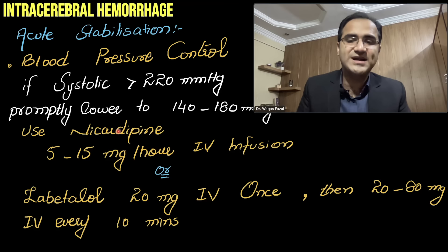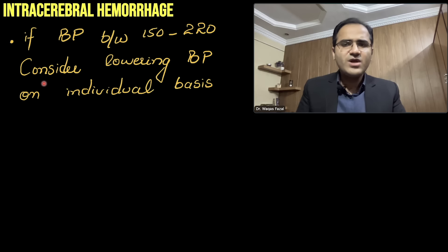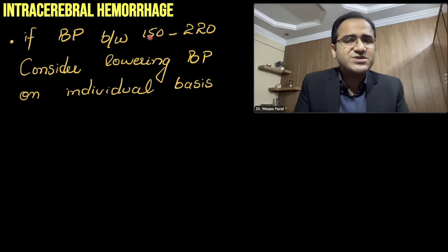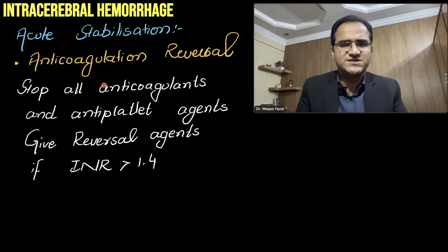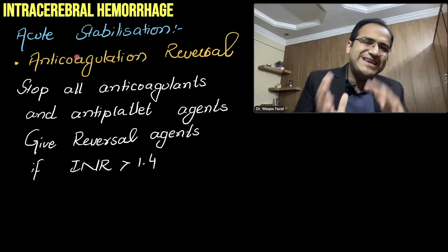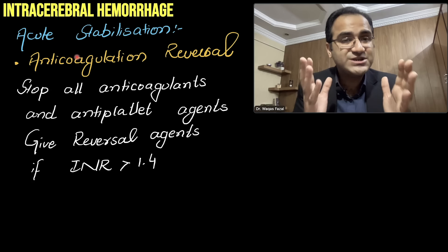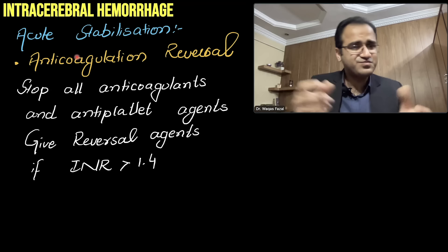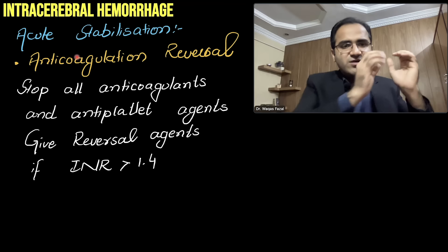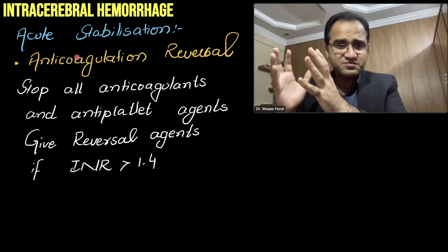If the patient presents with blood pressure between 150–220 mmHg, consider lowering BP on an individual basis according to risk factors. If the patient is on anticoagulants, stop all anticoagulants and antiplatelet drugs such as aspirin, heparin, or warfarin. If PT/INR is elevated, reverse anticoagulation: give protamine sulfate for heparin, and fresh frozen plasma plus vitamin K for warfarin.